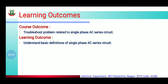Learning Outcomes: After watching this video, you will be able to understand the course outcome — that is, troubleshoot problems related to single phase AC series circuit. Single phase AC series circuit को handle करते वक्त जो भी problems आएंगे उसे कैसे solve करना है यह हम इस unit में पढ़ेंगे। The next learning outcome is to understand basic definitions of single phase AC series circuit — जो भी parameters और formulae और definitions हम इस वीडियो में पढ़ने वाले हैं।